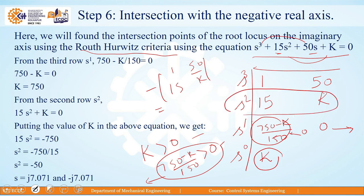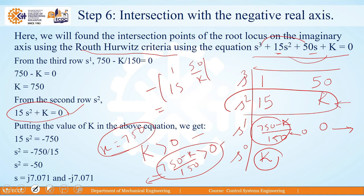Substituting K = 750 into the auxiliary equation 15s² + 750 = 0 gives s² = −50, so s = ±j7.071. These two values are the points where the root locus branches intersect the imaginary axis, and they are plotted on the S-plane.